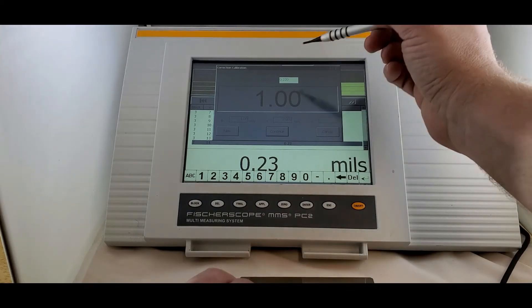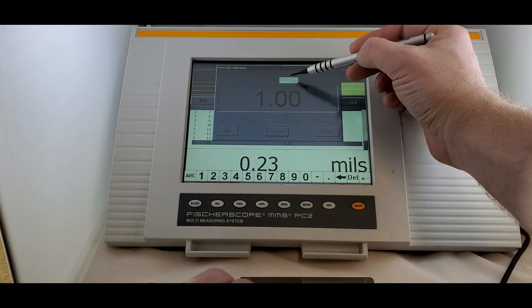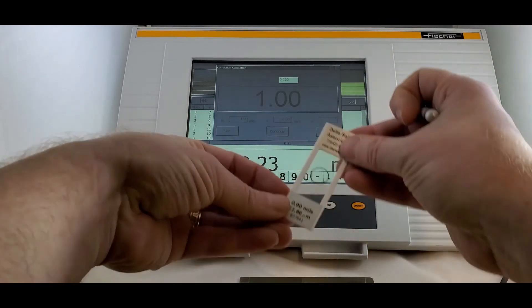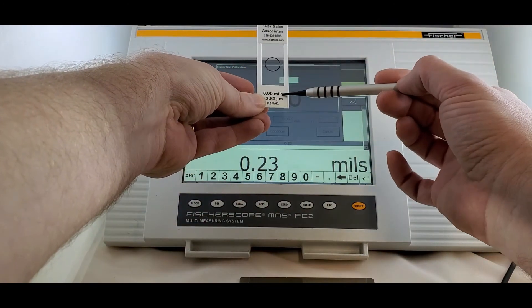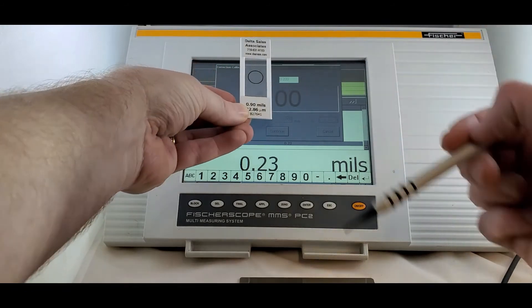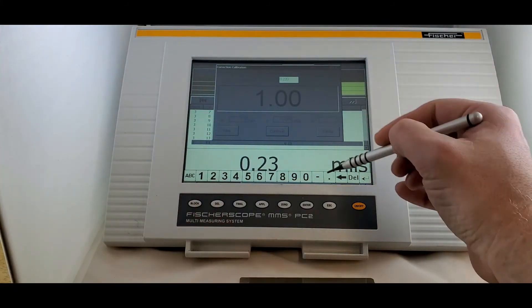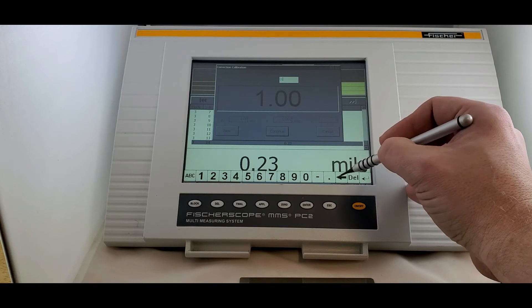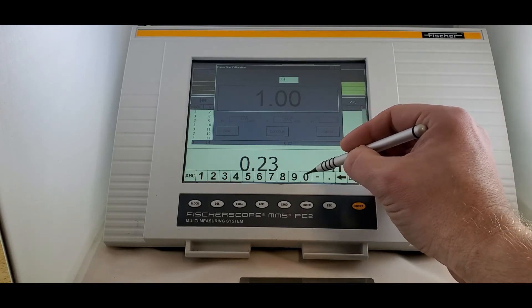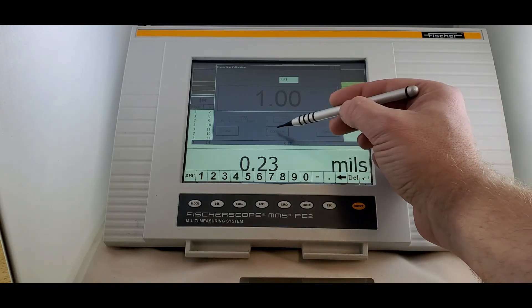And now up top, we want to make sure that this number matches this number on our standard. So down here on the little touchscreen, we're going to back this up and make this 0.9. Continue.